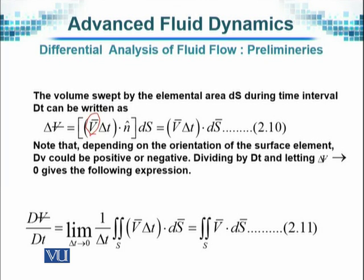Note that depending upon the orientation of the surface element, dV could be positive or negative because the fluid is coming in or coming out, and similarly the change in velocity will be coming in or coming out. So it can have a negative sign or positive sign, which reflects only the direction in which the flow is taken.